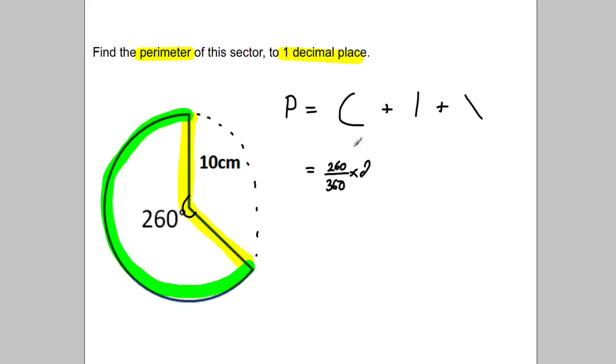In this question, the radius was 10, so the diameter would be 20. So I multiply that by 20, that's the curve bit, and I'm going to add on this 10 and this 10.